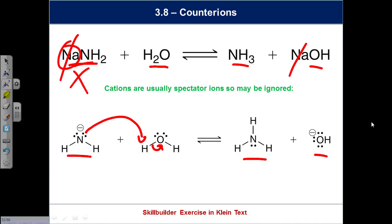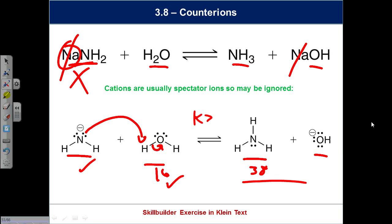Now look at the bottom. I've got a freshman-level equation, but we can work out whether the right-hand side or left-hand side is favored. What's the pKa of water, approximately? 16. What's the pKa of the conjugate acid on the right? 38. Which one is the stronger acid? The left. Which one is the stronger base? The right. Which side is favored? The right-hand side. Is K greater than one or less than one? That's a significant idea.